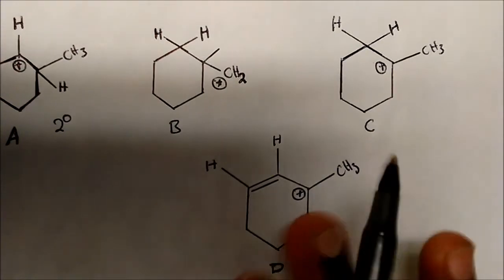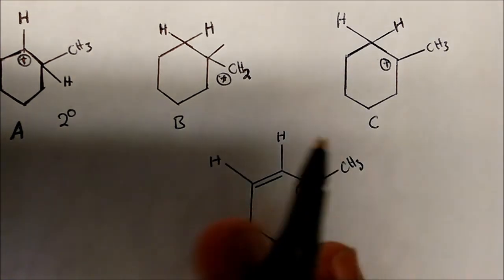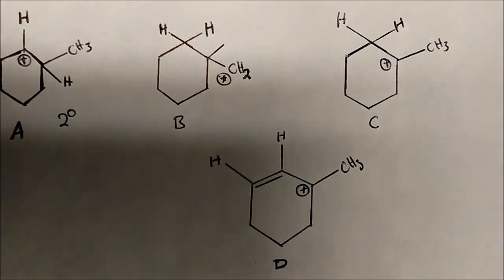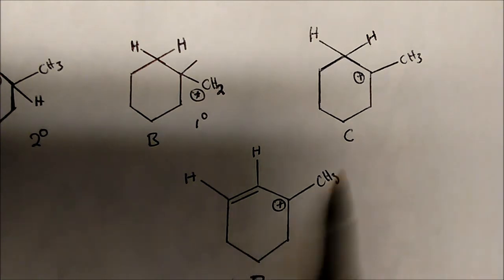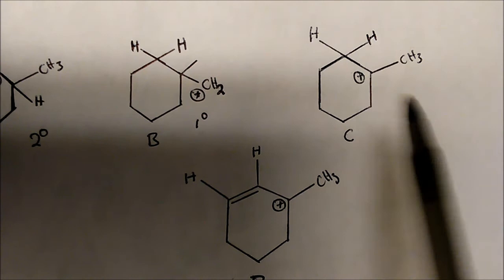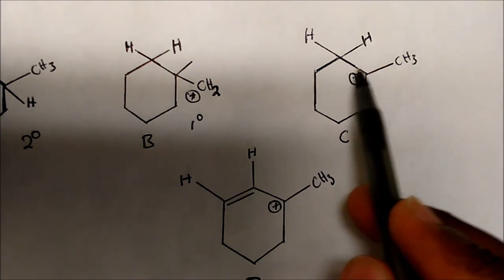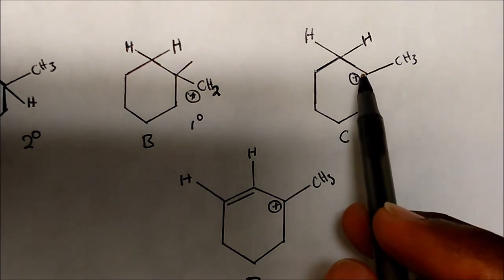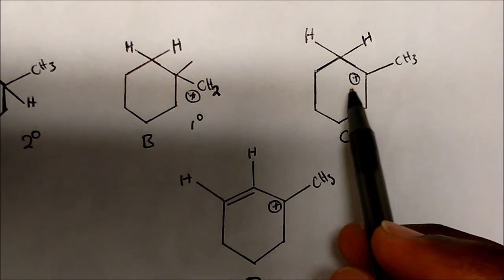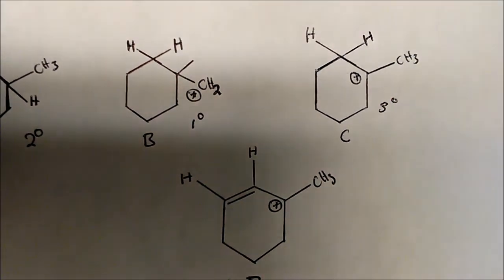When a carbocation has only one hydrogen attached to it, it is secondary. Now how about this one? The carbon with the plus charge here has two hydrogens bonded to it. Anytime you have a carbon with a plus charge and two hydrogens, that is a primary carbocation. And this one here has no hydrogens bonded to it — it only has three bonds, meaning it's missing two electrons, so there's no hydrogen. This is what we classify as a tertiary carbocation.